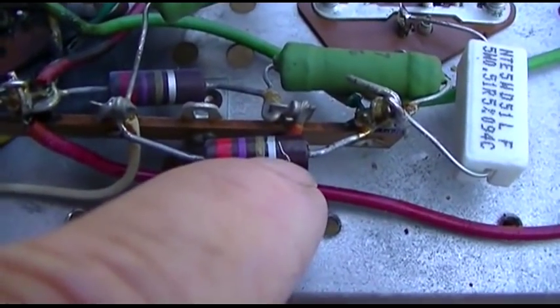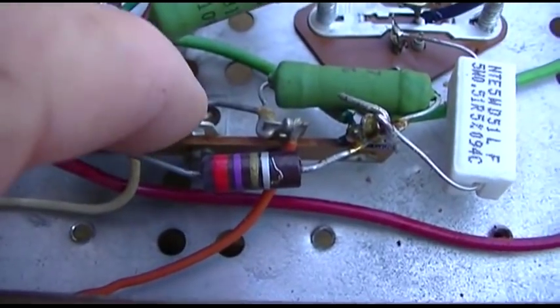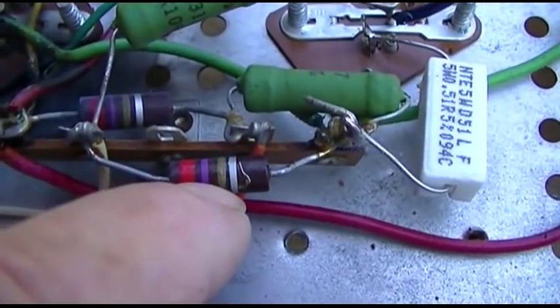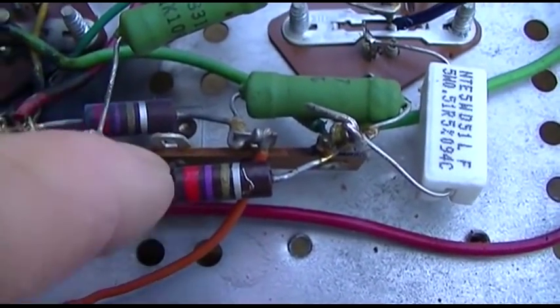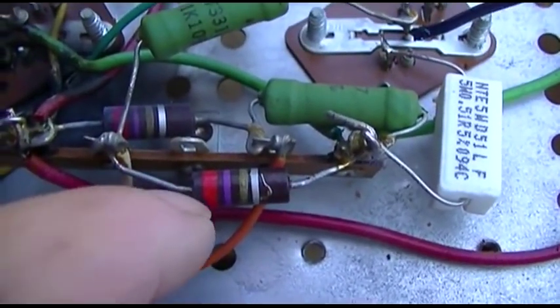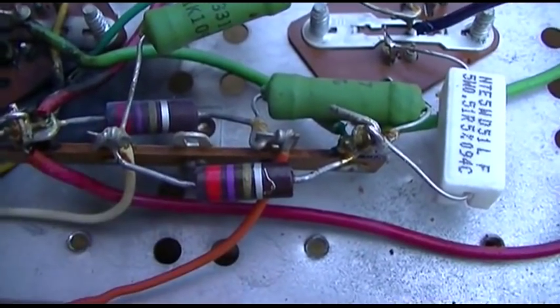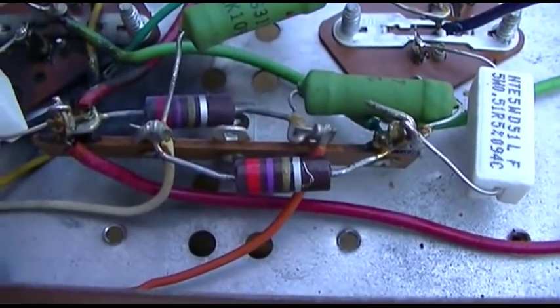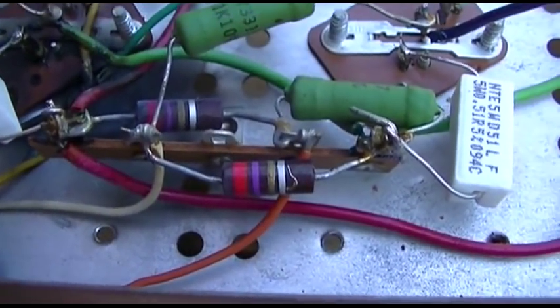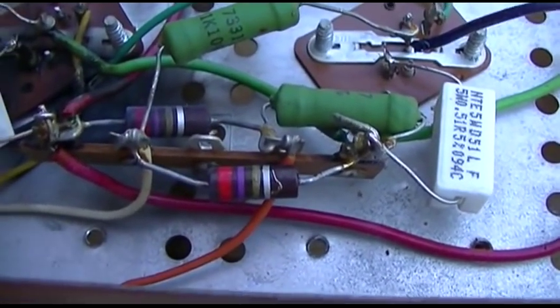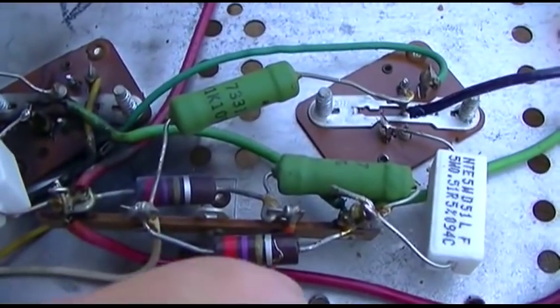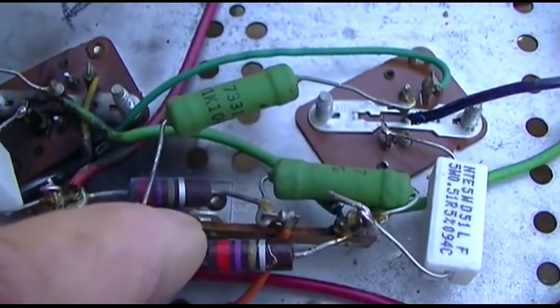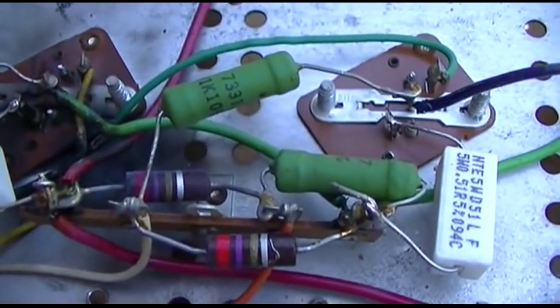And now the next step is I need to start adjusting. These are 2.7 ohms. I need to start adjusting these up until I get about 0.55 to 0.60 volts across from base to emitter on both transistors, and I have to change them both at the same time.